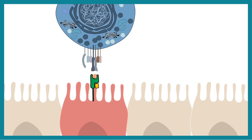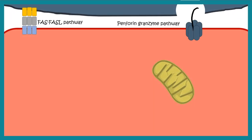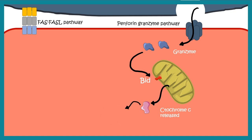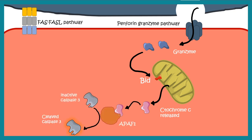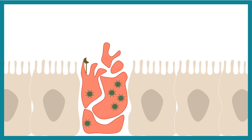Cytotoxic T cells recognize the infected cells and interact with them, secreting vesicles containing granzymes and perforin. Perforin causes pores in the membrane, while granzyme enters the cell and interacts with Bid — a mitochondrial pro-apoptotic protein — leading to leakage of cytochrome c. Cytochrome c interacts with Apaf-1, ultimately leading to activation of caspase, which initiates cell death. There are also Fas and FasL-mediated interactions that can activate caspase indirectly. All these pathways lead to destruction of the virus-infected cell, eliminating the virus as well.